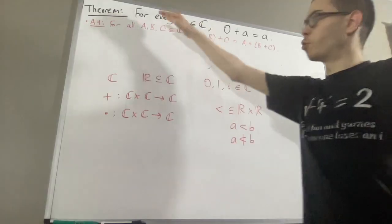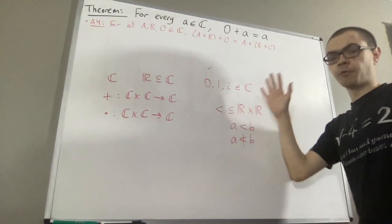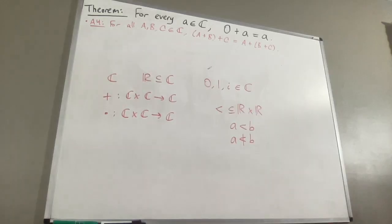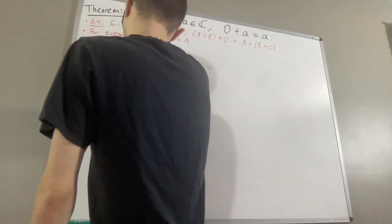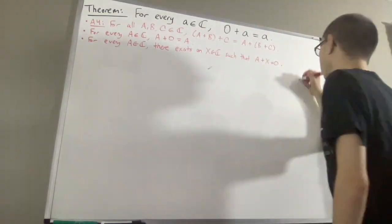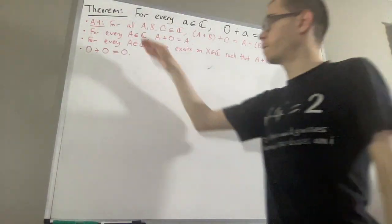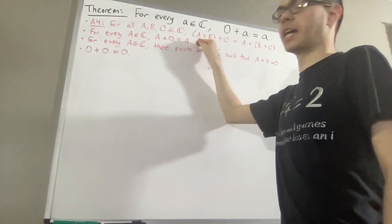And to prove this theorem, we are going to be using the following results that we have proven from the axioms. We have proven for every complex number a, a plus 0 is equal to a.